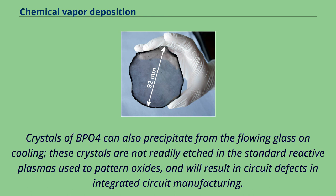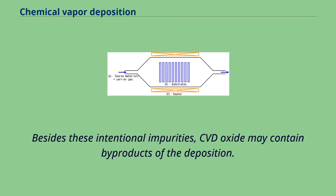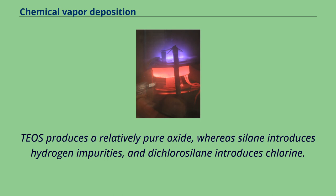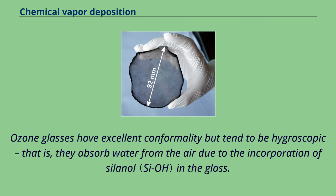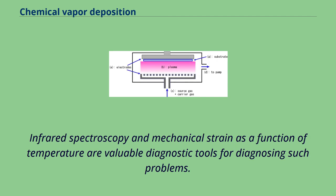Besides these intentional impurities, CVD oxide may contain byproducts of the deposition. TEOS produces a relatively pure oxide, whereas silane introduces hydrogen impurities, and dichlorosilane introduces chlorine. Lower temperature deposition of silicon dioxide in doped glasses from TEOS using ozone rather than oxygen has also been explored. Ozone glasses have excellent conformality but tend to be hygroscopic, that is, they absorb water from the air due to the incorporation of silanol in the glass. Infrared spectroscopy and mechanical strain as a function of temperature are valuable diagnostic tools for diagnosing such problems.